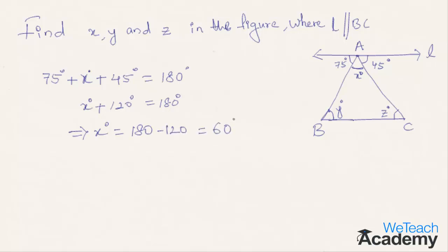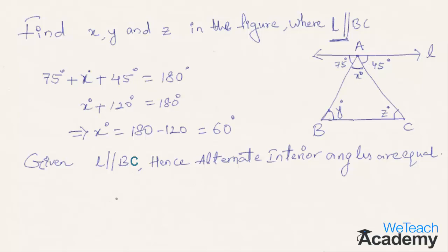Therefore, x equals 60 degrees. Now, it is already given that L is parallel to BC. We know that when two parallel lines are intersected by a transversal, the angles in a pair of alternate interior angles are always equal. Therefore, we get z equals 45 degrees since these are a pair of alternate interior angles.